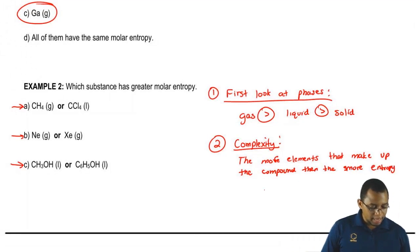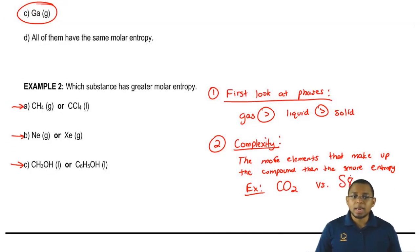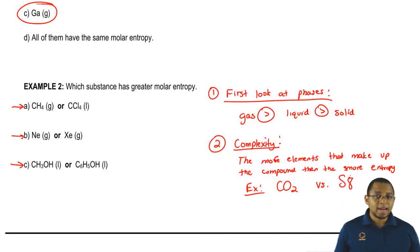So, for example, if I gave you CO2 gas versus S8 gas, you would say that CO2 is made up of three different atoms, one carbon, two oxygens. And S8 is made up of eight atoms of sulfur. So it has more elements that make it up, so it has more entropy. So S8 would have more entropy.